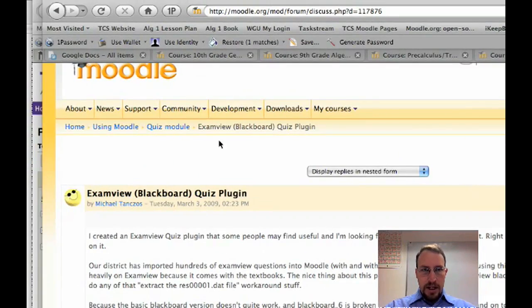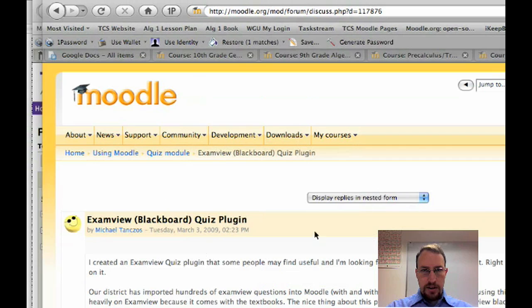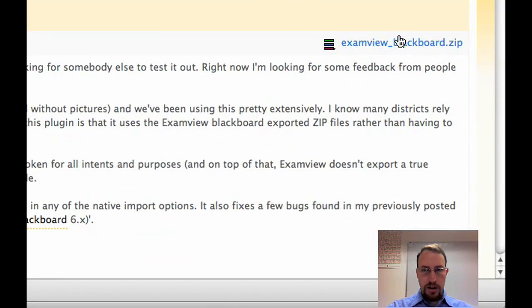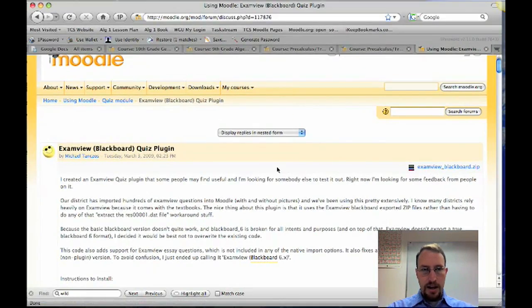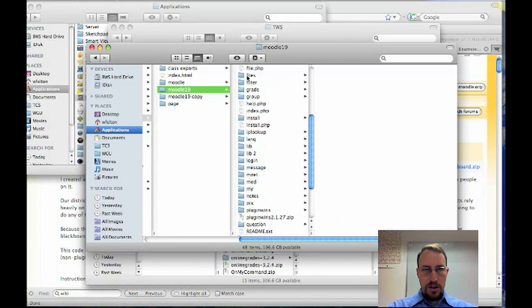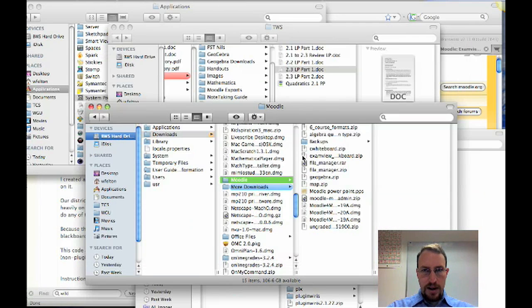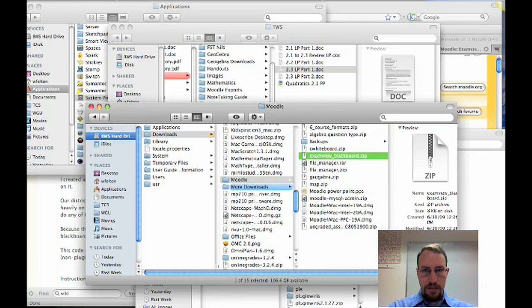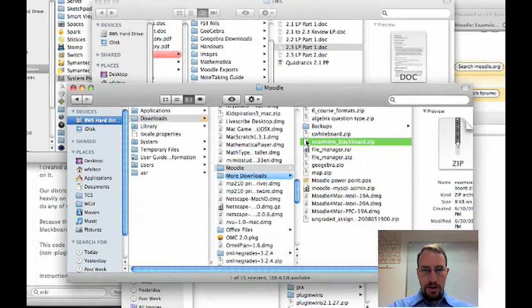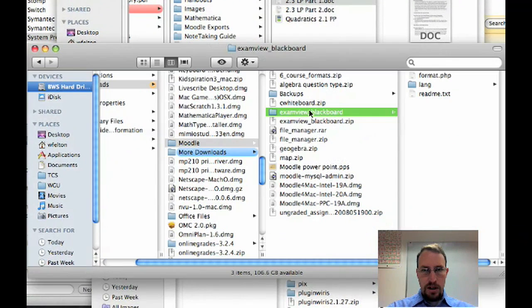I came across this plugin here on the moodle.org site. It's under this forum posting. There's the zip file right there. I don't believe this plugin is currently under the plugins menu. I haven't checked recently, but when I found it, it was not there. I downloaded this file right here and you can see I have a set of downloads here. There's my ExamView Blackboard.zip and the first thing I want to do is extract that as a folder.